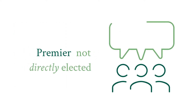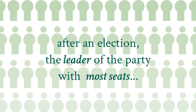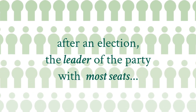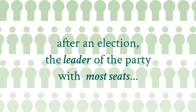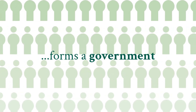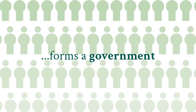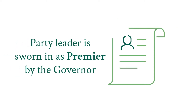When we vote in an election, we don't vote for the Premier directly. We vote for our local MP in our seat. After an election, the leader of the party or parties that can demonstrate to the Governor that they have the majority of the seats in the Legislative Assembly is asked to form a government and is sworn in as Premier by the Governor.